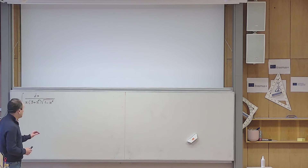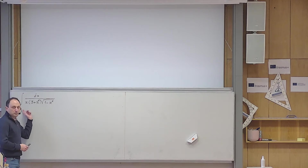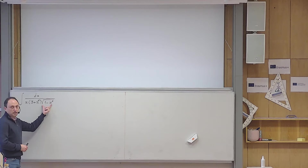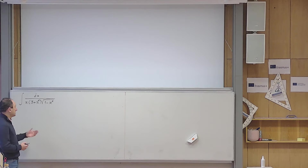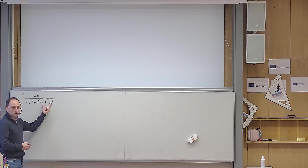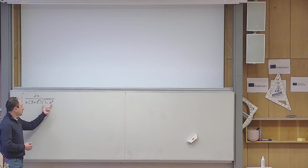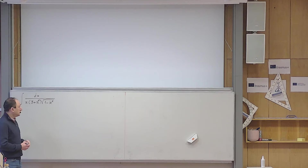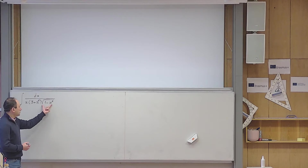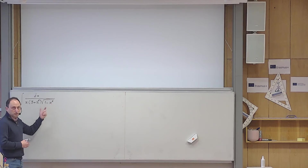Now let us solve the problem. I would consider this a good problem because usually the square root of 1 minus x squared appearing in an integrand indicates that trigonometric substitution is useful, x equals sine theta for example. I am not saying this is not possible, but then the problem becomes a little bit harder. So here I will take u to be the square root of 1 minus x squared to get rid of it in the first place.